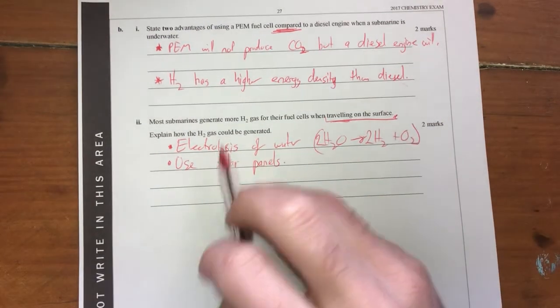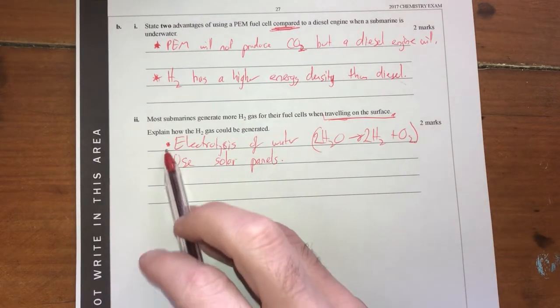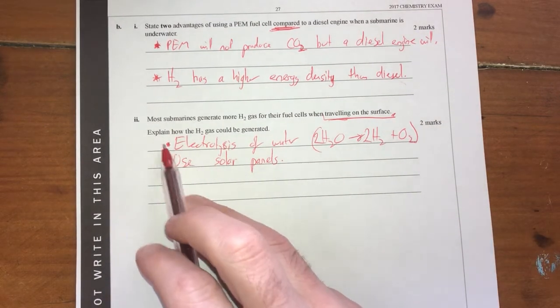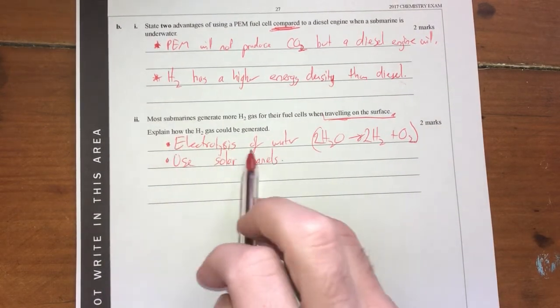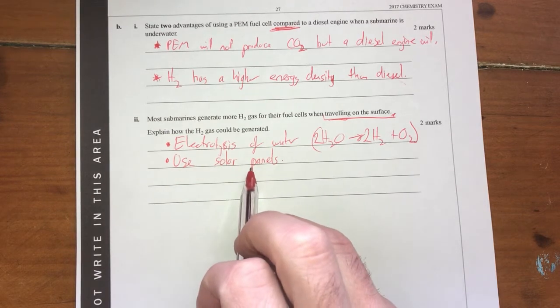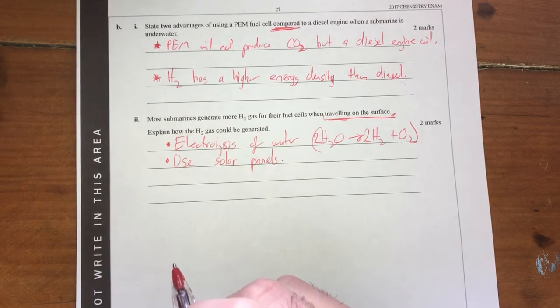I'm going to say I'm going to use solar panels to get the energy for the electrolysis of water. So some way of doing that would be really good. Two marks, two dot points, both how electrolysis of water, how do I do the electrolysis? I use solar panels to get the electricity to do the electrolysis.